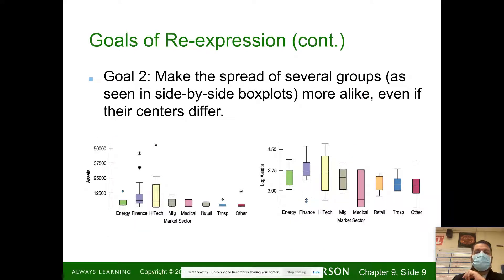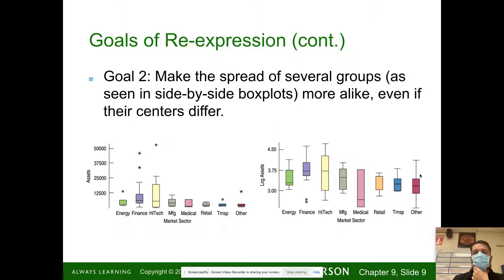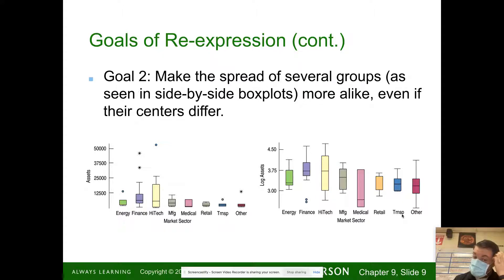Another goal is to make the spread of several groups, as seen by side-by-side box plots, more alike even if their centers differ. When we look at the one on the left, the interquartile range is much larger here than for others. But when we re-express that — showing the log of assets compared to the market sector — they look a little bit similar.